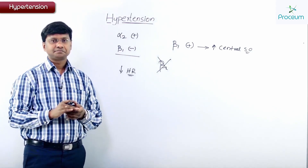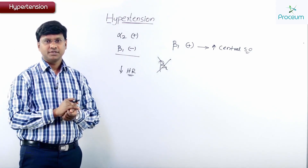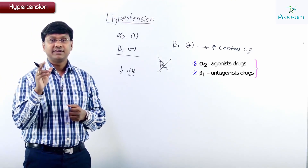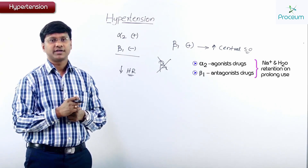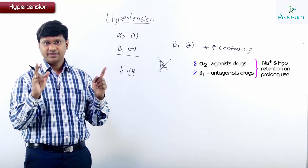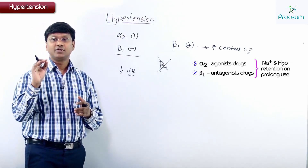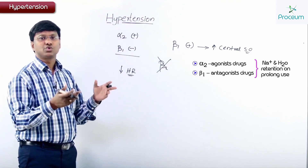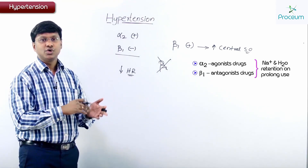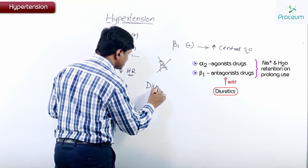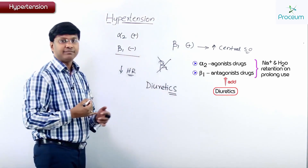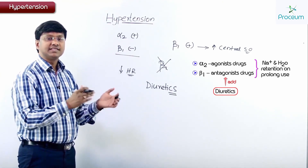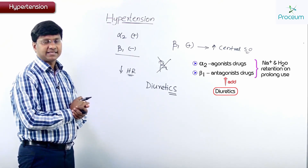All of these drugs — whether alpha-2 agonists or beta-1 antagonists — will result in sodium and water retention on prolonged use. To avoid this sodium and water retention, diuretics must be added. Once diuretics are added to these agents, they will restore the sensitivity of the antihypertensive activity.